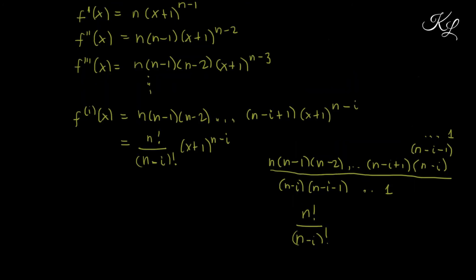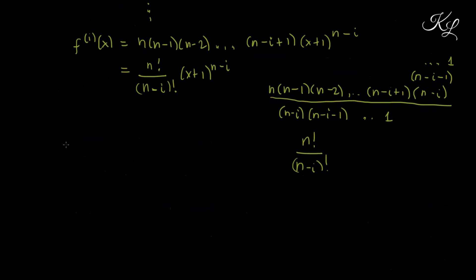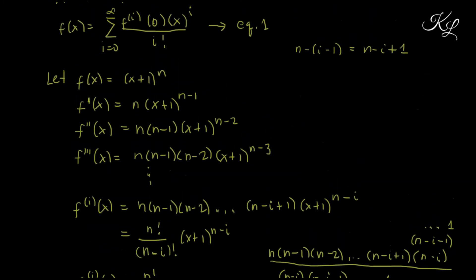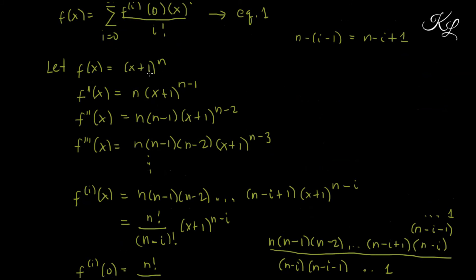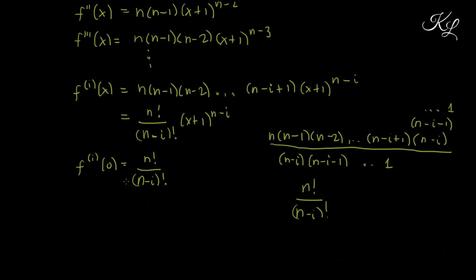For equation 1, we need the i-th derivative of f evaluated at 0. We have f^(i)(0) equals n factorial over (n minus i) factorial, times (0 + 1)^(n minus i). Since 1 raised to any power is always 1, this simplifies to n factorial over (n minus i) factorial.